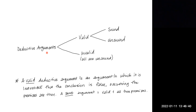To determine whether an argument is valid or invalid, if it's already known to be deductive, we would say: if we assume the premises to be true, is it impossible that the conclusion is false? If that is the case, then it will be a valid deductive argument.